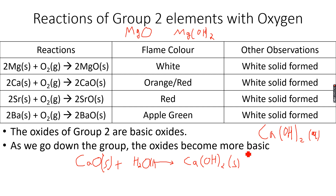Because only a small percentage of calcium hydroxide is aqueous, it is quite low in basicity, similar to magnesium oxide. However, when strontium oxide and barium oxide are dissolved in water, we get their aqueous hydroxides, making them much more basic. As a result, the pH of the hydroxides increases down the group.